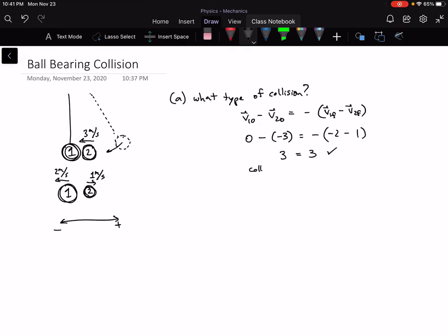So collision is elastic. If that was not an equality, well, it wouldn't be elastic then, would it? And we would know that it's inelastic and then we can only apply conservation of momentum rather than both conservation of momentum and conservation of mechanical energy.